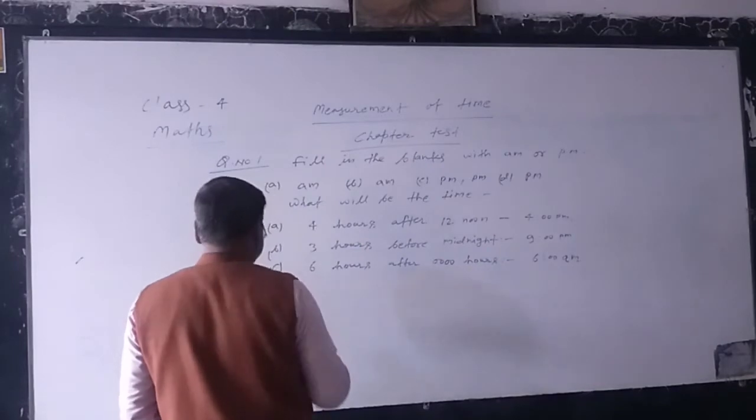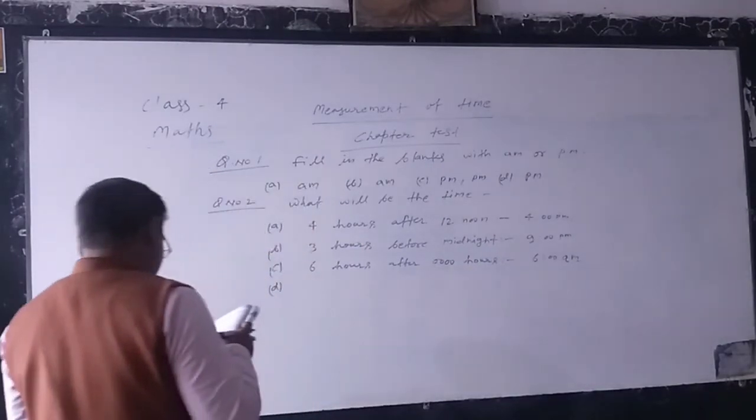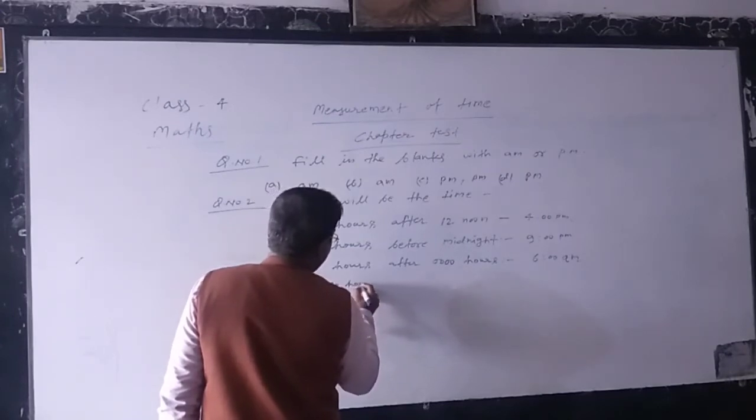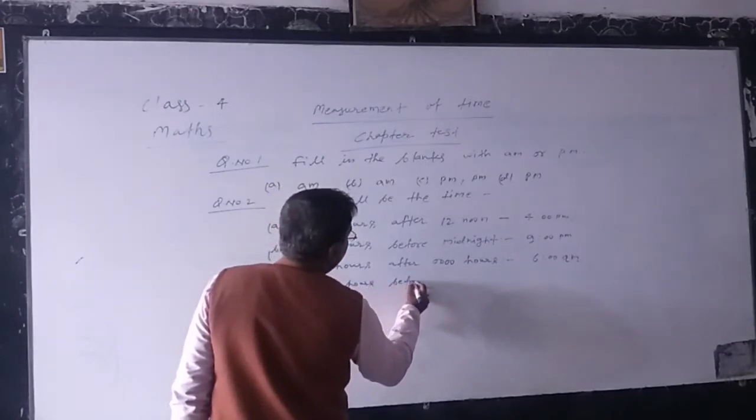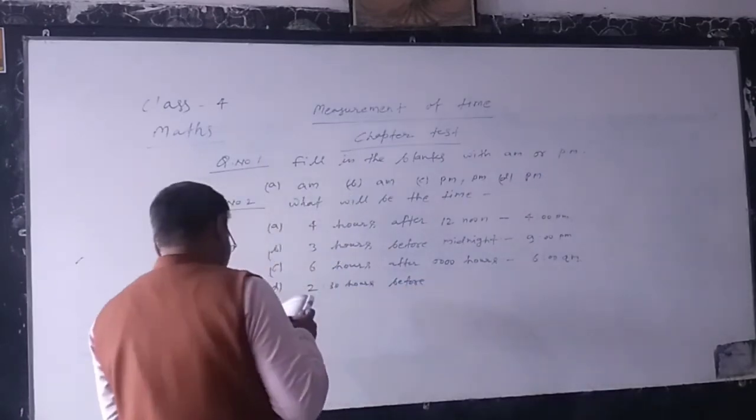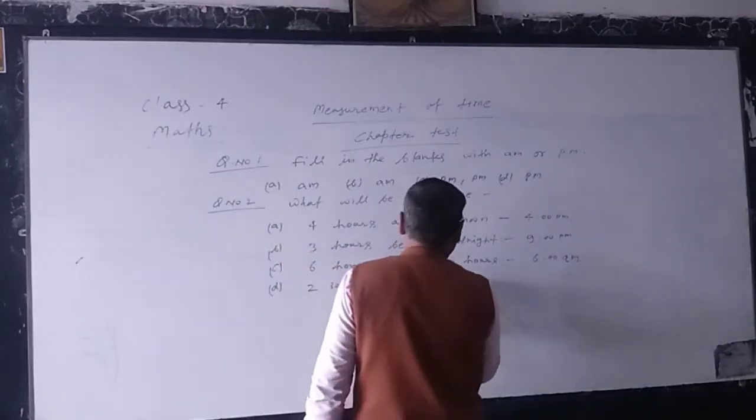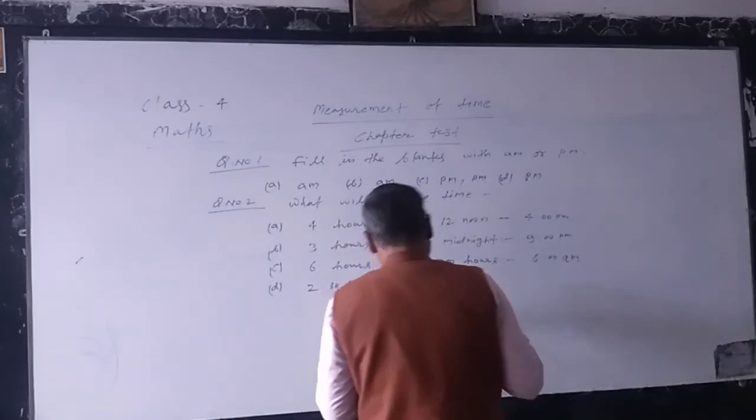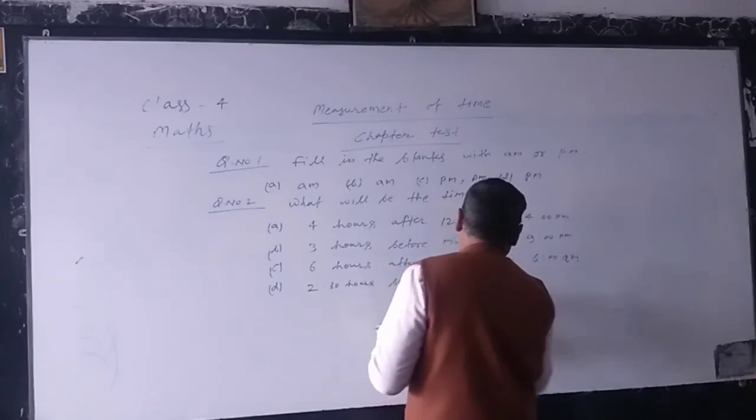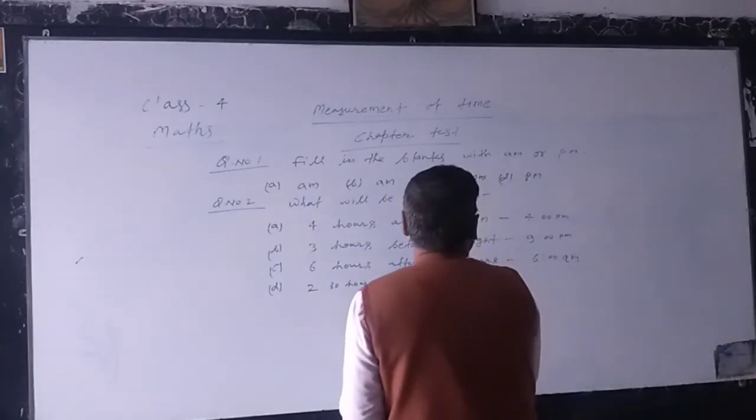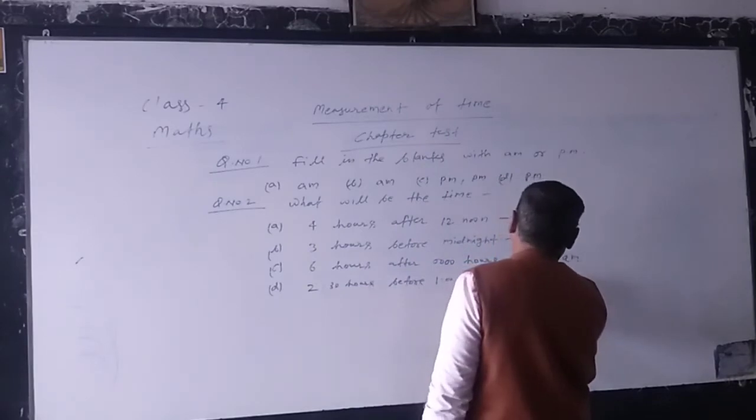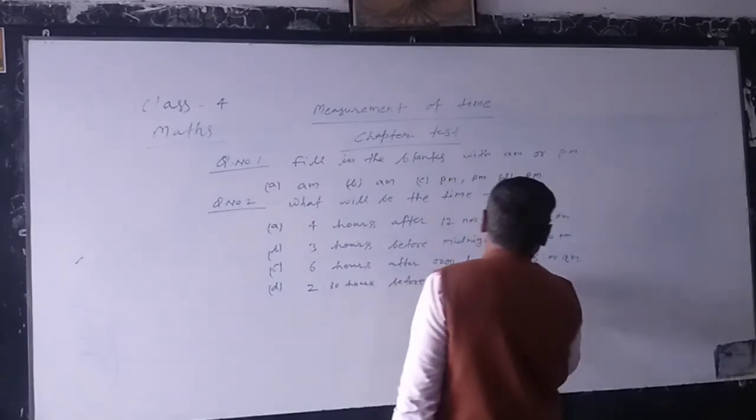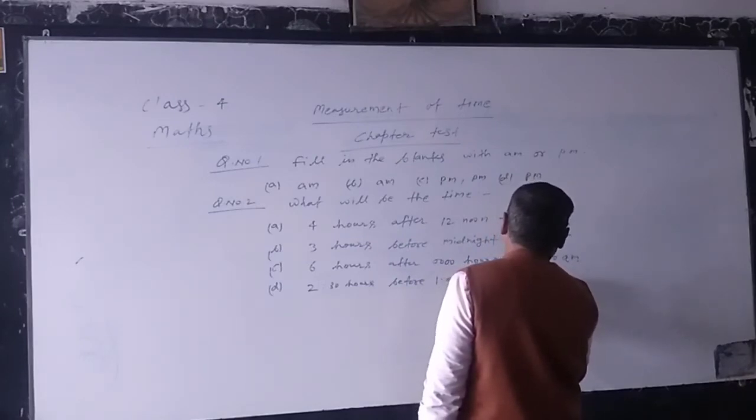D. 2:30 hours before 1 P.M. You subtract 1 P.M. to 2:30, you find it is 11 P.M. 10:30 A.M.